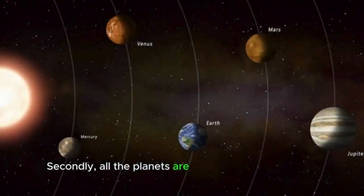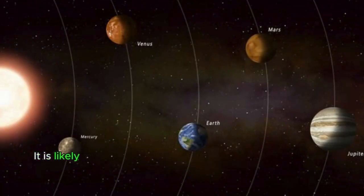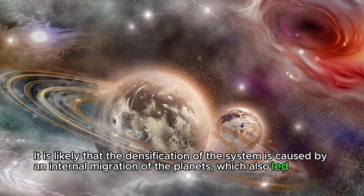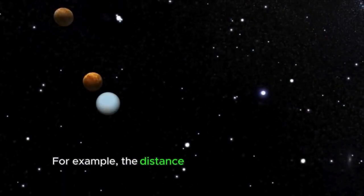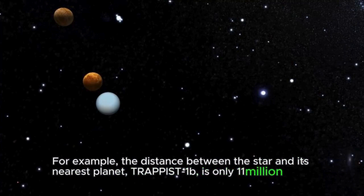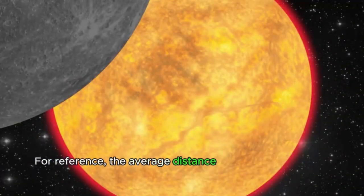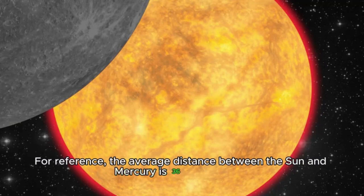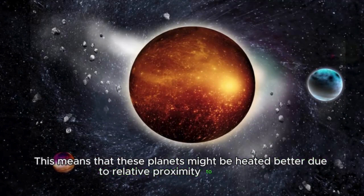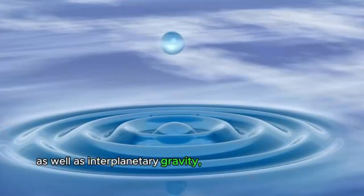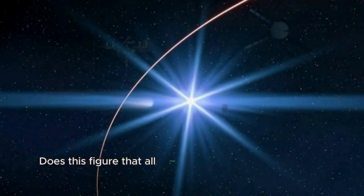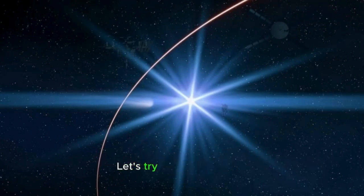Secondly, all the planets are very close to each other. It is likely that the densification of the system is caused by an internal migration of the planets, which also led to their resonance. For example, the distance between the star and its nearest planet, TRAPPIST-1b, is only 11 million miles. For reference, the average distance between the Sun and Mercury is 36 million miles. This means that these planets might be heated better due to relative proximity to their star, as well as interplanetary gravity, which would allow them to retain water inside themselves. Does this figure that all these planets can hypothetically be habitable? Let's try to figure this out.